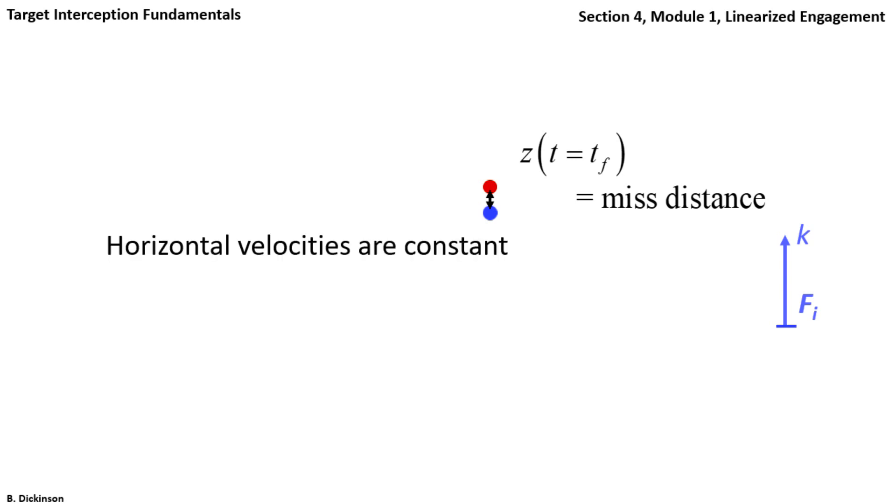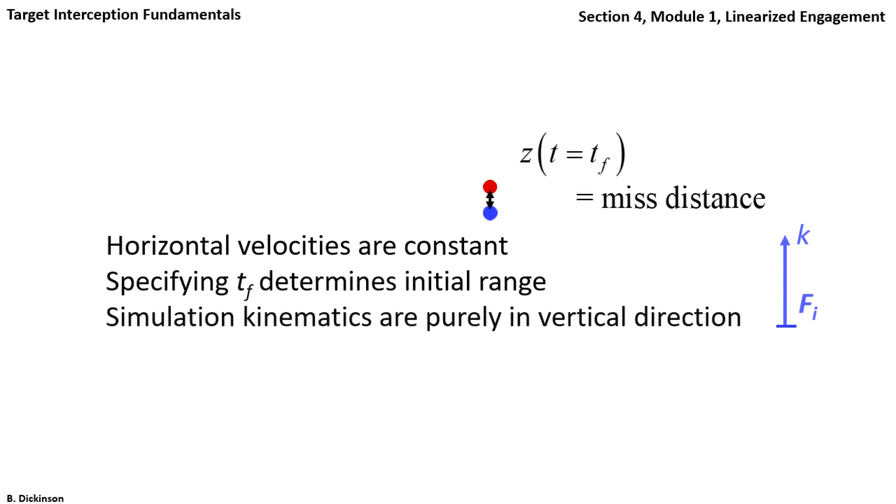In the linearized engagement, horizontal velocities are constant. Specifying Tf determines the initial range. And the kinematics are purely in the vertical direction.